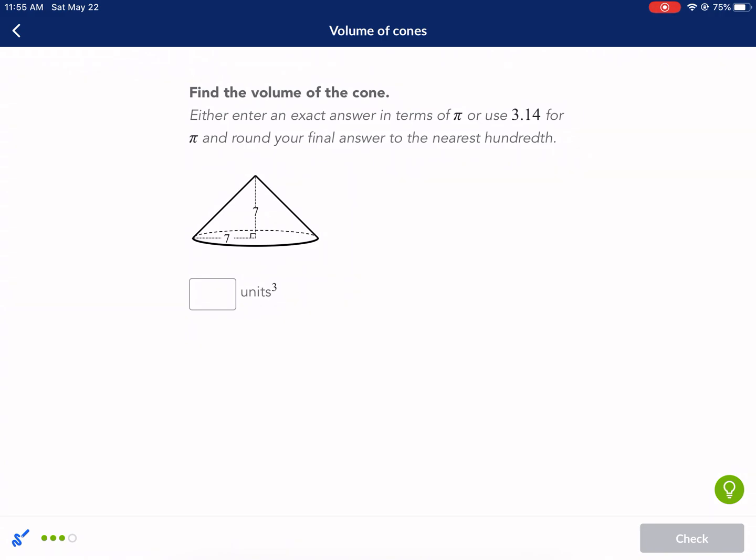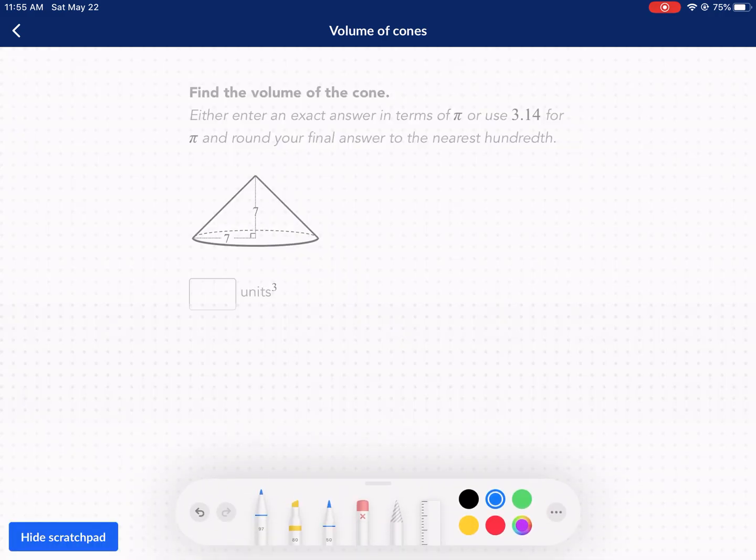And enter an exact answer. It's the same thing. So this is a pretty basic one. I was using red for my radius. Radius red. Height green. Well, that one doesn't have alliteration. But we have volume equals 1 third pi 7 squared times 7. Oh, that's going to be 7 cubed. 7 times itself 3 times. I believe that's 343. It is. 343.